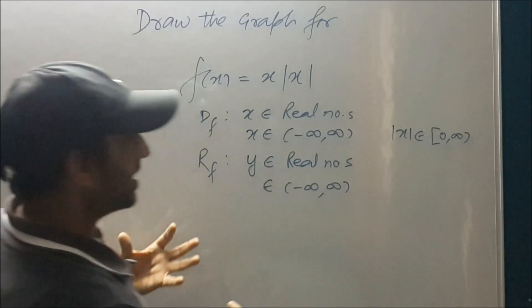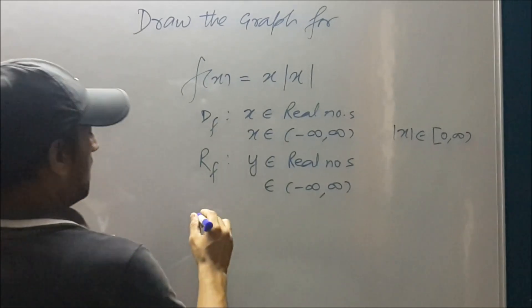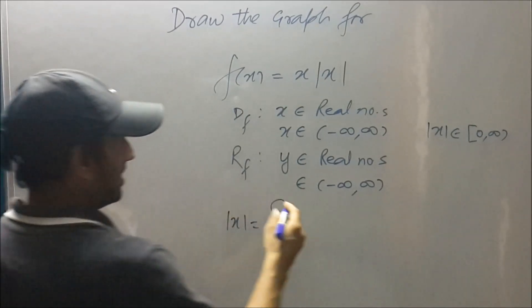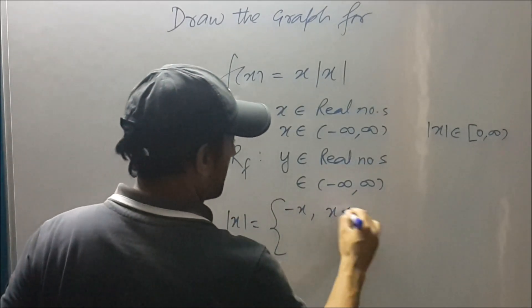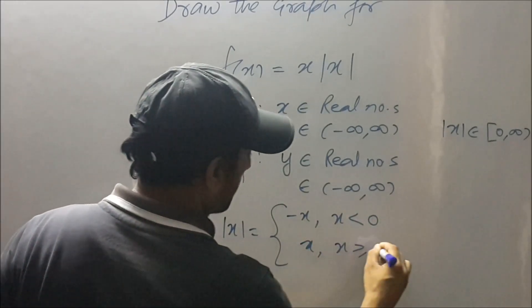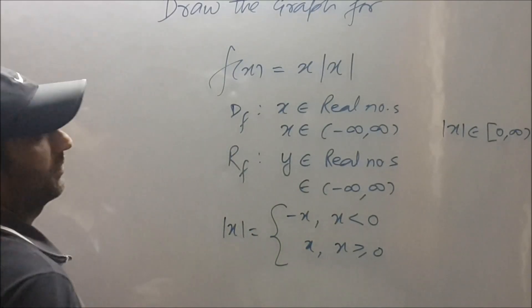Now before making the graph we will convert this into branches. We know that mod x is minus x when x is less than zero and x when x is greater than equal to zero.